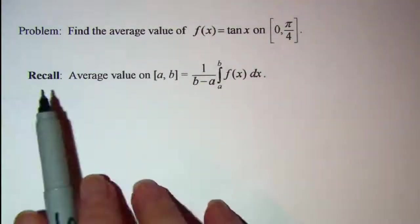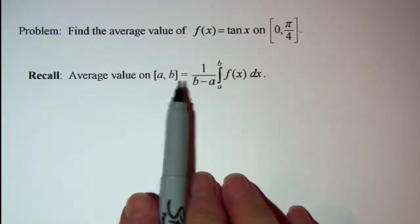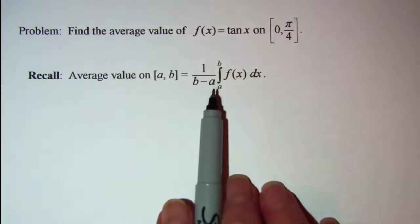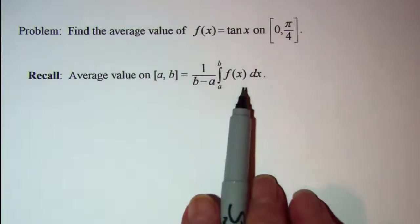Recall that the average value on a closed interval from a to b is equal to 1 over b minus a times the definite integral from a to b of f of x dx.